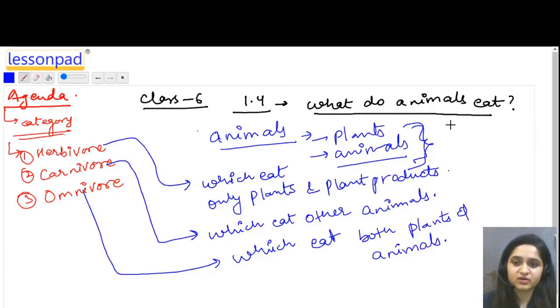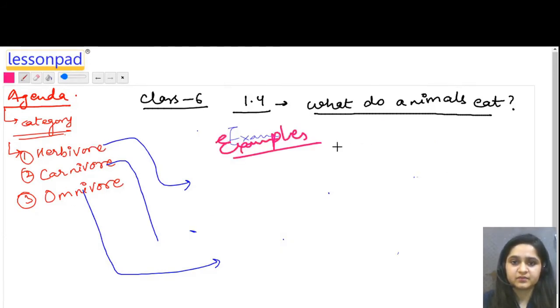There are various animals. Some eat plant products, some eat animal products. On this basis, in these food sources, we have categorized them into these three categories: herbivore, carnivore, omnivore.